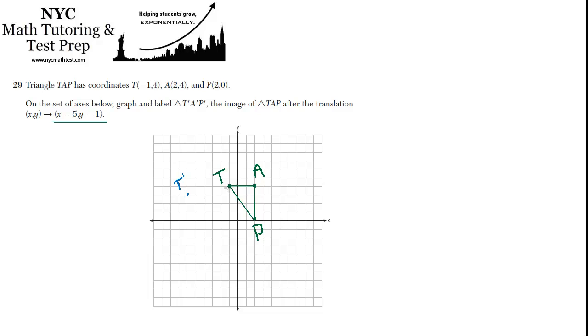Then 1, 2, 3, 4, 5 and down 1 — this will be the location of A prime. And P prime is going to be below A, right here.